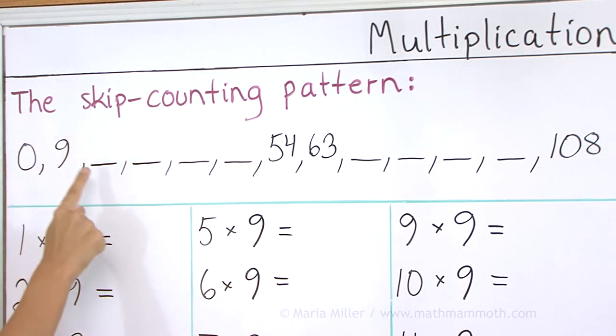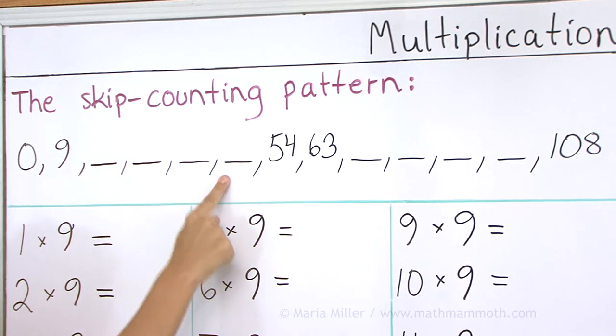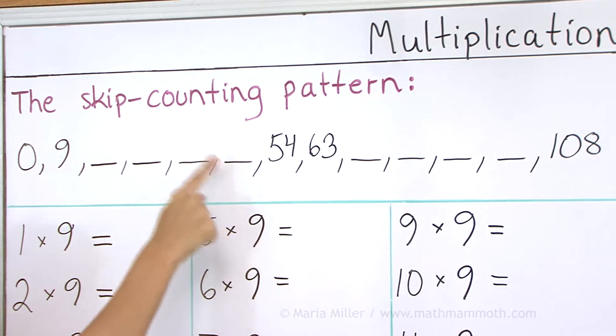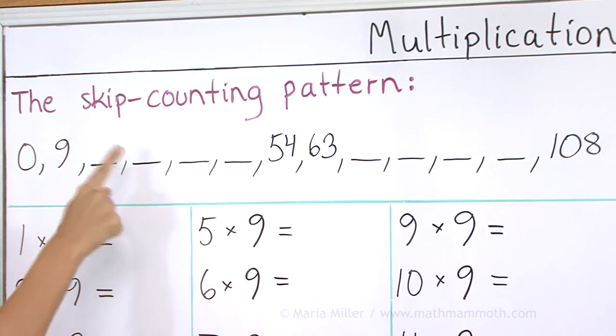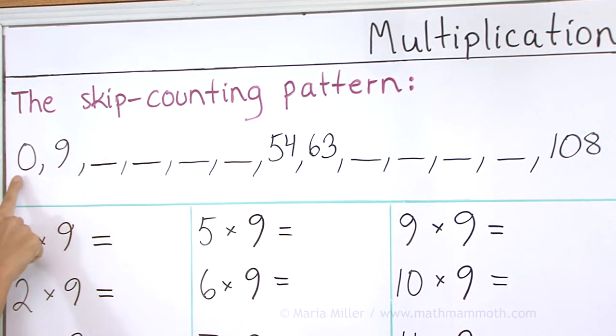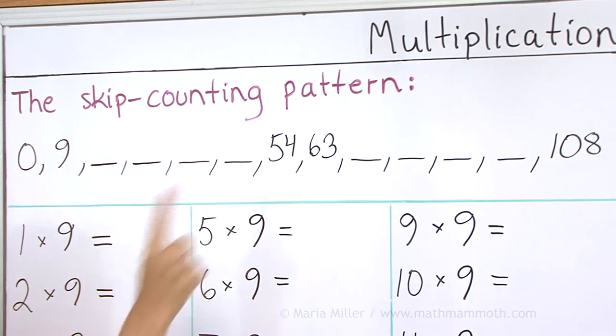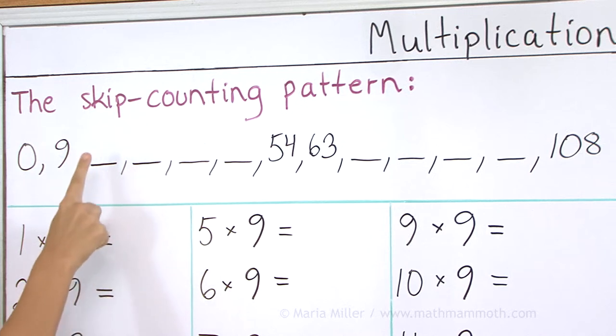And then backwards. 54, 45, 36, 27, 18, 9, and 0. Your turn. 54, 9, and 0.